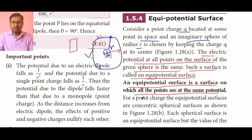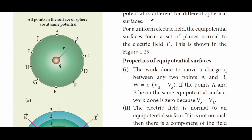For a point charge, the equipotential surfaces are concentric spherical surfaces as shown in figure 1.28b. Each spherical surface is an equipotential surface, but the value of the potential is different for different spherical surfaces. For a uniform electric field, the equipotential surfaces form a set of planes normal to the electric field E, as shown in figure 1.29. We will see figures 1.28 and 1.29 one by one.